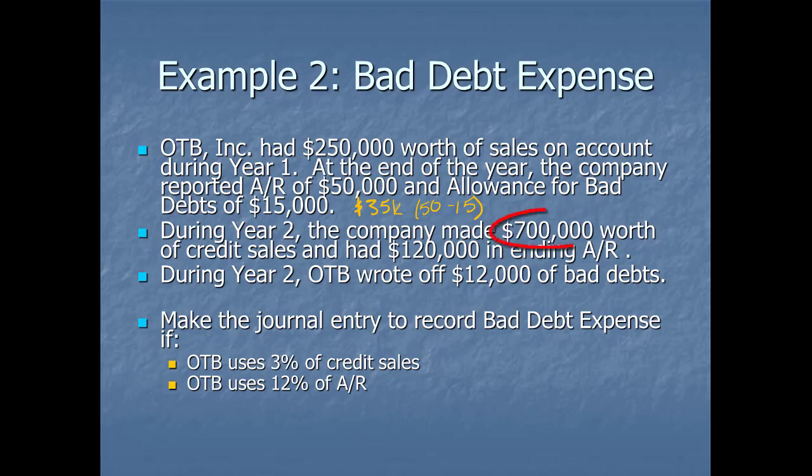During year two, the company made $700,000 of credit sales, and they end up with $120,000 in ending account receivable, and we wrote off $12,000 of bad debts. We want to make the journal entry to record bad debt expense if we use 3% of credit sales, and if they use the 12% of accounts receivable method.